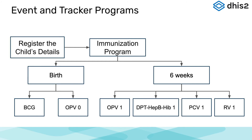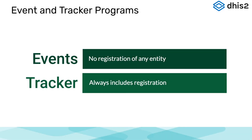The tracker model is not limited to tracking people, however. Other entities such as geographical areas, lab samples, or fridges could all be examples of items that could be tracked. To summarize, the key difference between the two models is that tracker, as the name implies, involves the registration and tracking of a unique entity across multiple services and visits, whereas the event model allows for collection of individual level data without the ability to uniquely track this information.